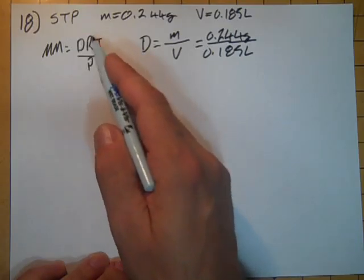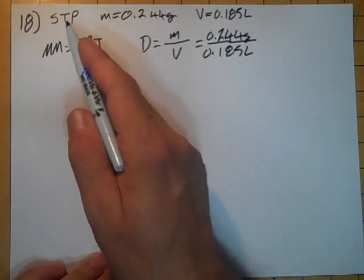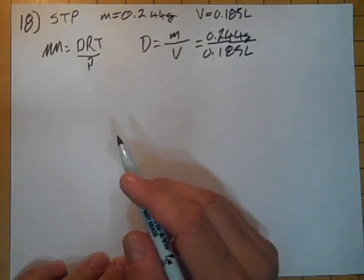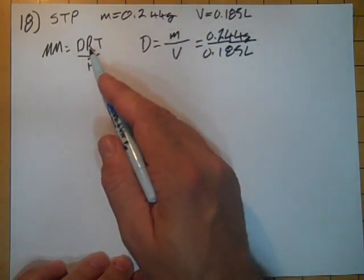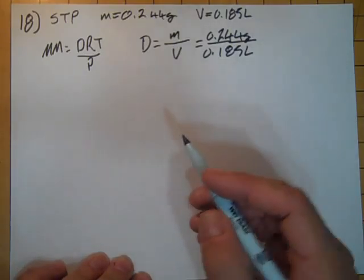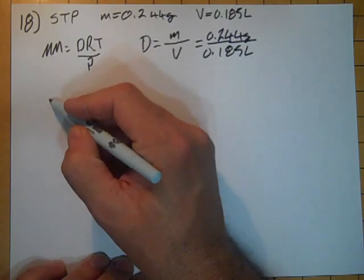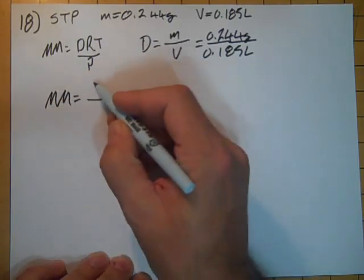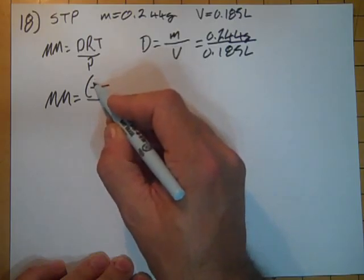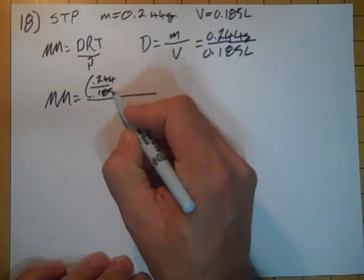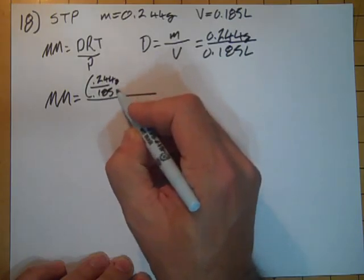If it's STP, standard temperature is 273 and standard pressure is one atmosphere, that tells me my R is going to be 0.0821. So I can simply substitute in the molar mass of this sample. I've got my density term, 0.244 over 0.185, that's grams over liters.